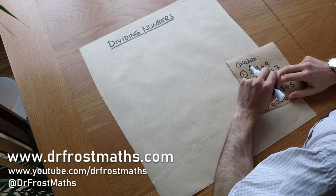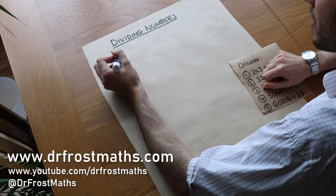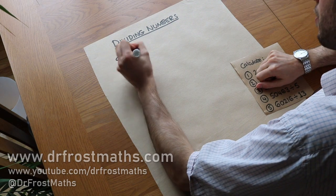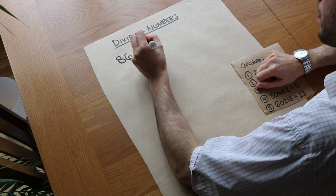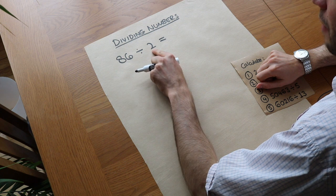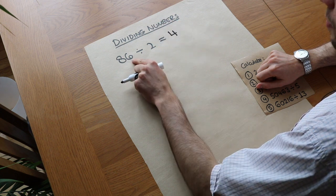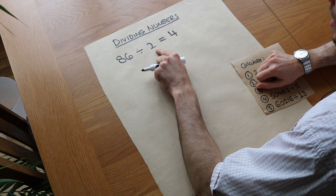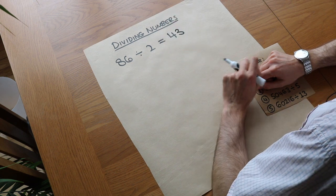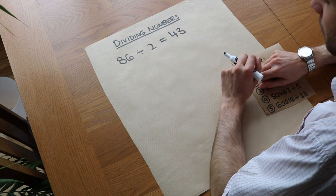Hello and welcome to this video on dividing numbers. Sometimes we can do it mentally. For example, 86 divided by 2: we've got 8 tens, and if we divide that by 2 we'd have 4 tens. And if we have 6 units and we divide that by 2 we'd have 3 units. So we can instantly see that 86 divided by 2 is going to be 43.